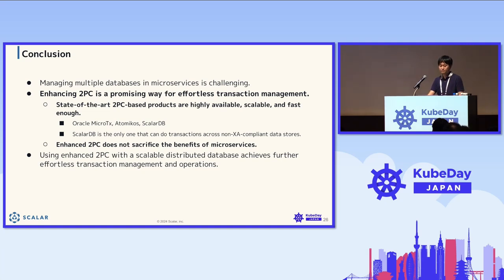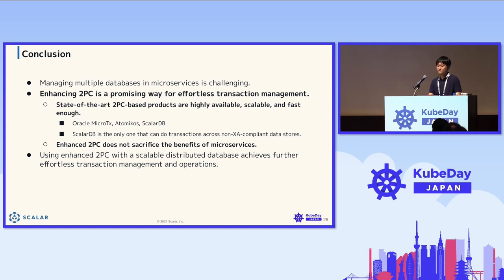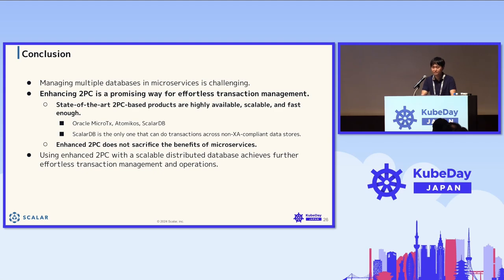Finally, let me conclude. In this session, we first explained the challenges of transaction management in microservices and introduced the approaches of Saga, 2PC, and TCC as solutions. We then discussed enhanced 2PC as a promising way for effortless transaction management. We believe that state-of-the-art 2PC-based products are highly scalable, available, and fast, and do not sacrifice the benefits of microservices. In particular, ScaleDB is the only solution that can perform transactions across non-XA-compliant data stores. We propose that using enhanced 2PC with a scalable distributed database achieves further effortless transaction management and operations in microservices. Thank you for your attention.